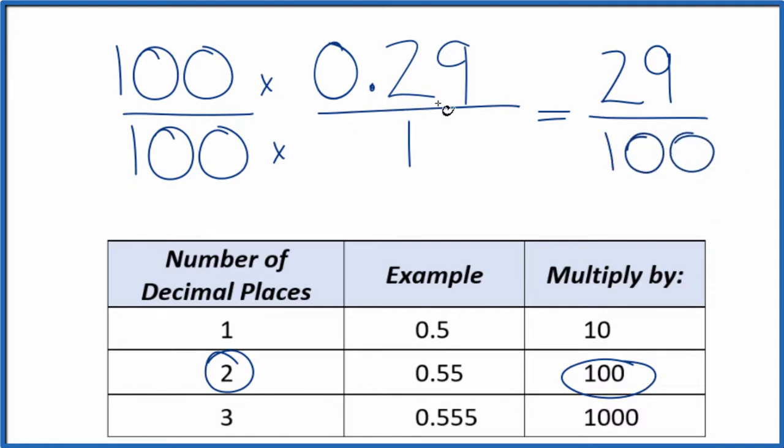The decimal 0.29 is equal to 29 over 100. We can't reduce this any further. If you divided 29 by 100, you get 0.29.